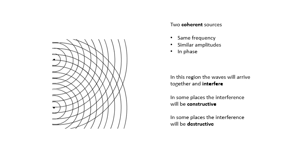What happens is that these waves will spread out — these wave fronts will spread out from these two sources. And in this region, they will interfere. They will arrive at the same time in different places, and they will interfere with each other. In some places they will interfere constructively, and in some places they will interfere destructively.